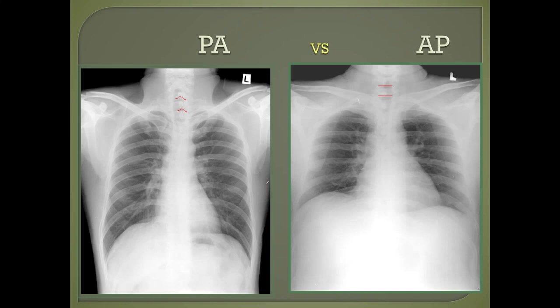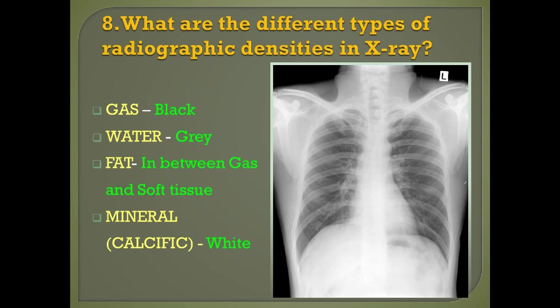Question number eight: what are the different types of radiographic densities in X-rays? Gas or air looks black in color. Water looks gray in color. Fat appears in between gas and soft tissues. Calcific structures — that is, bones — look white in color.